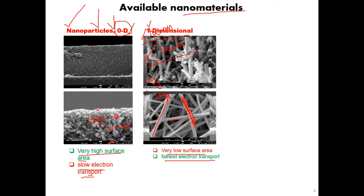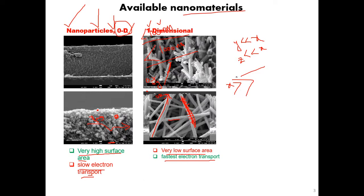Why is it called one dimension? Consider this wire: it has an x-axis (the long side), but the y-axis is very, very small compared to x, and the z-axis is also very, very small compared to x. We ignore those two smaller axes — this is why we call it one dimension. The x-axis is very, very large compared to the other two dimensions, and that is why we term it one dimension.